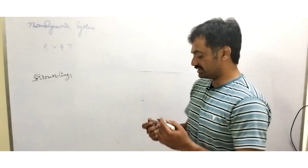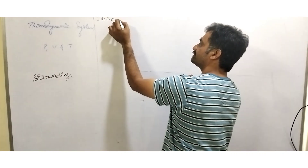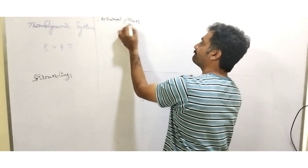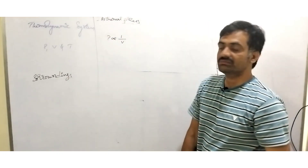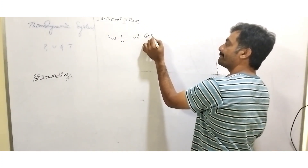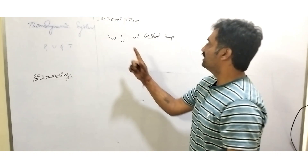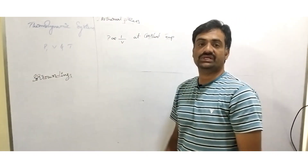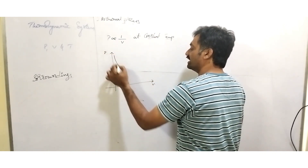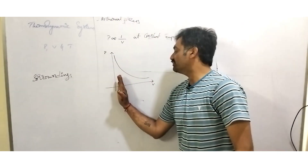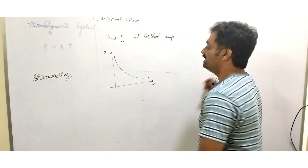When we consider an isothermal process, pressure is inversely proportional to volume at constant temperature. So here the temperature will not change, whereas with respect to pressure, volume changes. The graph between pressure and volume will show that as volume increases, pressure decreases, and as volume decreases, pressure increases.